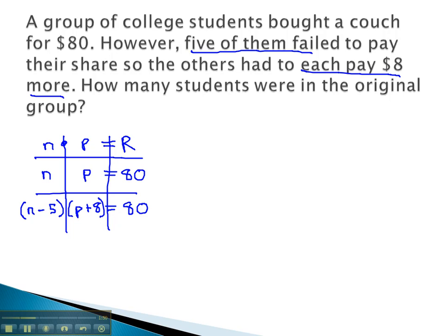You will notice that each row becomes an equation in the simultaneous product. Number times price equals 80, and number minus 5 times price plus 8 equals 80 as well.